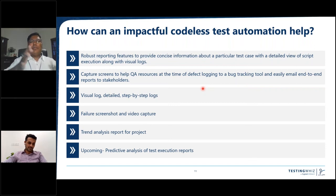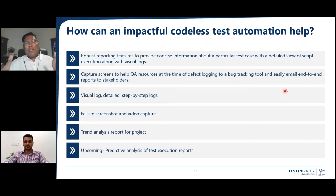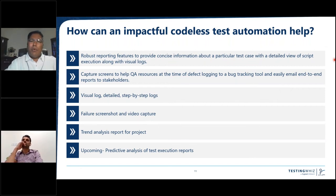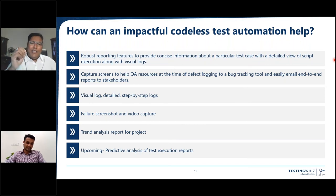If there are five components and components two and four have the maximum defects coming in, the automation tool should tell us about defect prediction capability — saying that on those particular components, you should test more in your regression to find more defects, while in areas where no change has happened, those test cases can be automatically kept aside from execution. AI/ML is an integral part of intelligent testing now.